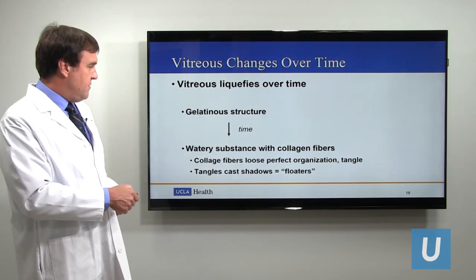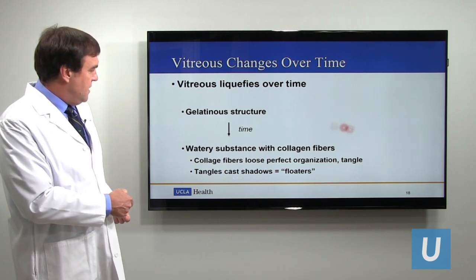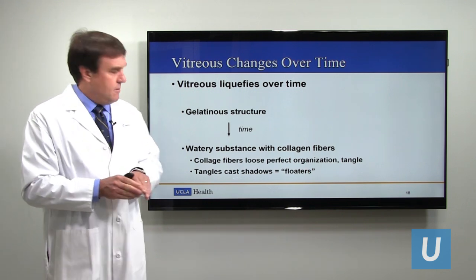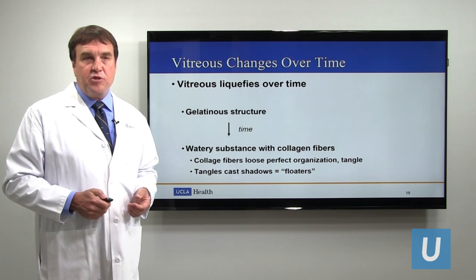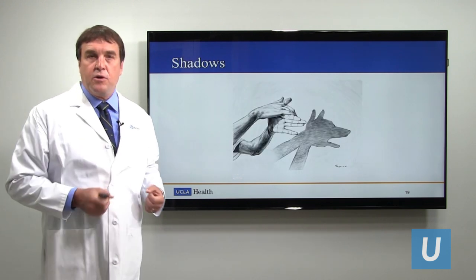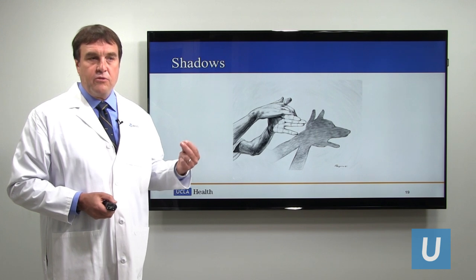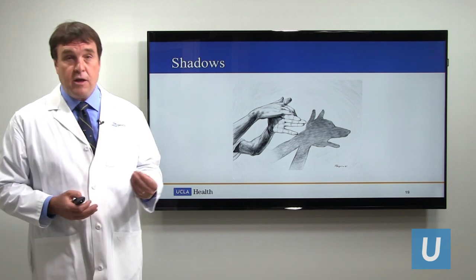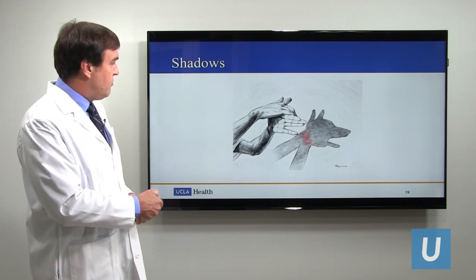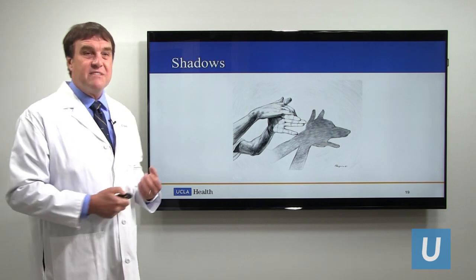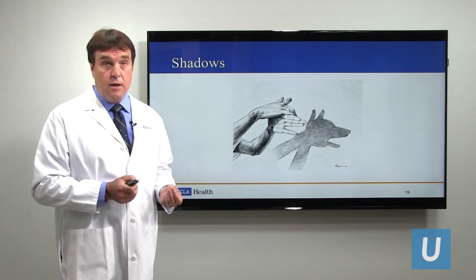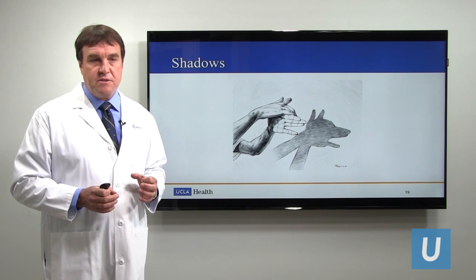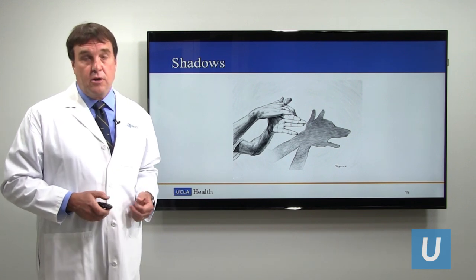As the watery substance increases between the collagen fibers, they lose their perfect organization and start tangling and clumping together. These tangles cast shadows — just like you can make shadow figures with your hand — on the retina, which are perceived as dark spots of varying density depending on how close or how far they are from the retina. Just like a hand moving closer to a wall makes a shadow more distinct, vitreous floaters are more distinct and bothersome when they are closer to the retinal surface.